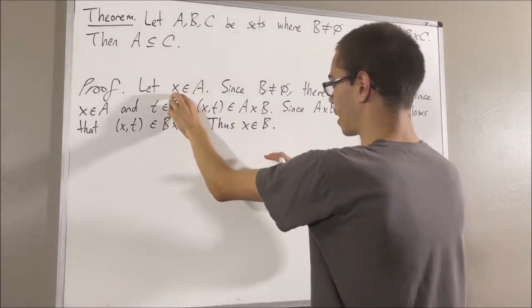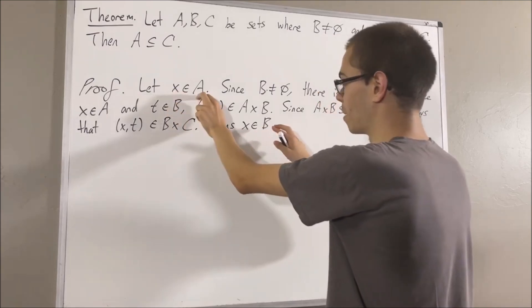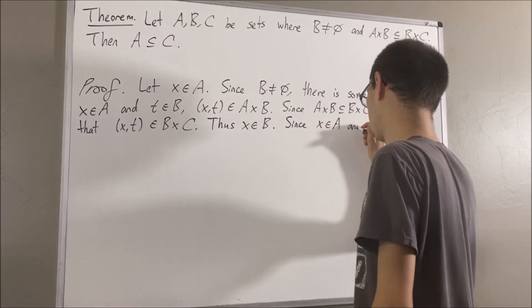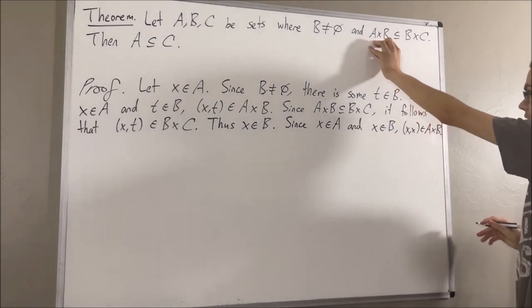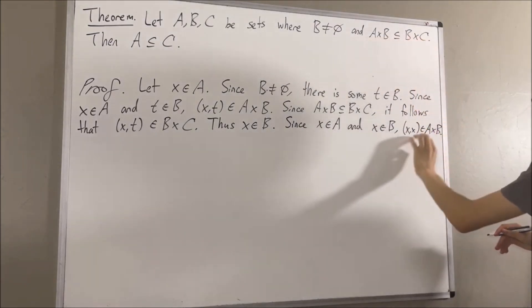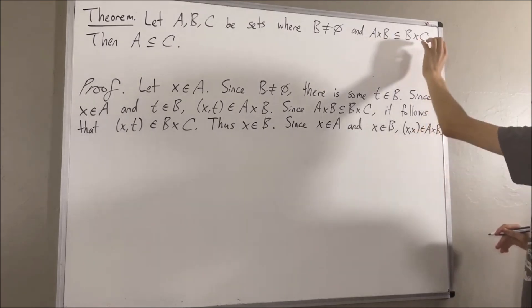This tells us that the ordered pair X comma X is an element of A times B. And then, since A times B is a subset of B times C, it follows that X comma X must then be an element of B times C.